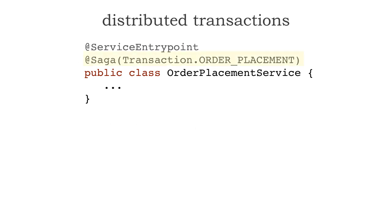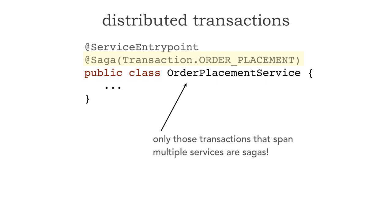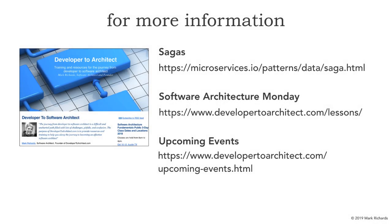One important thing to remember when using sagas: only put a saga annotation on those transactions that span multiple services. If order placement was completely self-contained within a single service, this is not a saga. For more information, you can go to Chris Richardson's site at microservices.io/patterns/data/saga.html. Sagas are useful at least to identify what services are involved, even if you don't implement the rollbacks or state machines. All these lessons are located at developer2architect.com/lessons.